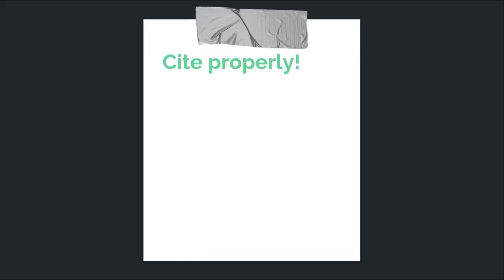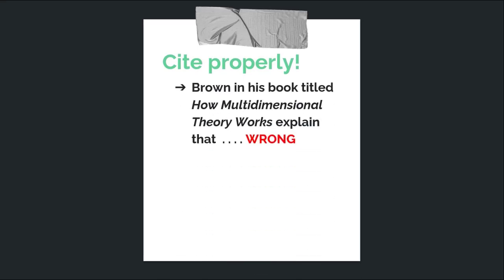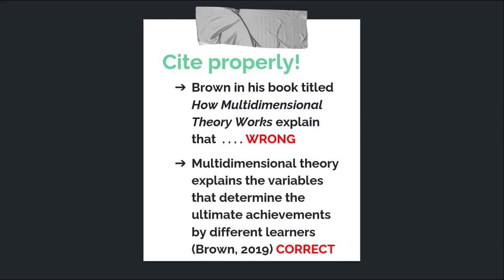The last one is: cite properly. Many students make the mistake of writing the whole or entire title of the source in their paper — that's not necessary, in fact that is wrong. When you want to cite an idea from Brown, you must not write the entire title of Brown's book. Instead, simply write the last name of the author and the year of the publication. That's the correct way of citing someone else's work. Do not mention the whole title — simply the last name of the author and the year of the publication. That will be enough.